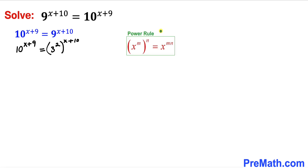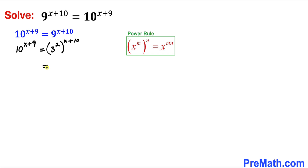Now let's recall the power rule of exponents. According to this rule we are going to multiply out these nested exponents. So therefore we are going to apply it on the right hand side. The right hand side is going to become 3^(2x), since 2 times x gives 2x, plus 2 times 10 gives us 20, so we get 3^(2x+20).